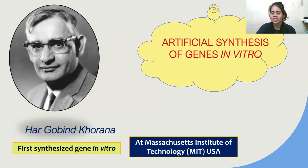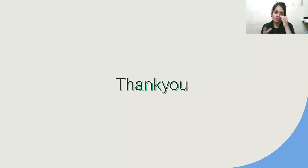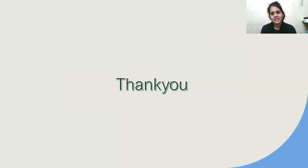Har Gobind Khorana was the first one to synthesize a gene in vitro, at the Massachusetts Institute of Technology. So, to summarize: recombinant DNA is the fusion of two sources of DNA — one is your gene of interest, and the other is the plasmid vector. The vector is an agent that helps put it into the competent host cell. I'll meet you in the next video covering other important parts of this chapter. Bye, take care, and study hard!